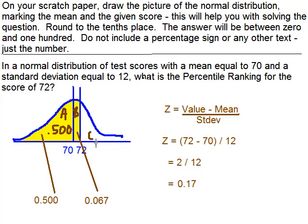So now we have our two areas. Area A, .500, area B, .067. We just need to add those together to get this combined area. So we say .500 plus .067 equals .567.